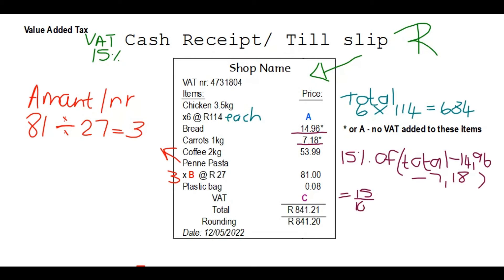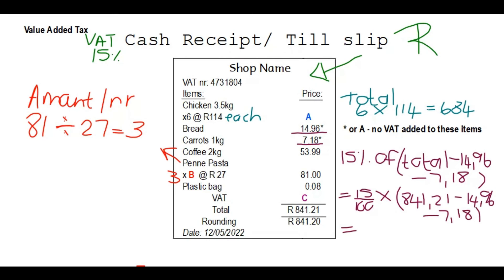The total amount on the slip is R841.21. We calculate 15% multiplied by that total minus the non-VAT items (bread R14 and carrots R7.18). Put all of this in your calculator. The answer is R122, and since we're working with money we round off to two decimal places — giving 86 cents. So the VAT (C) is R122.86.